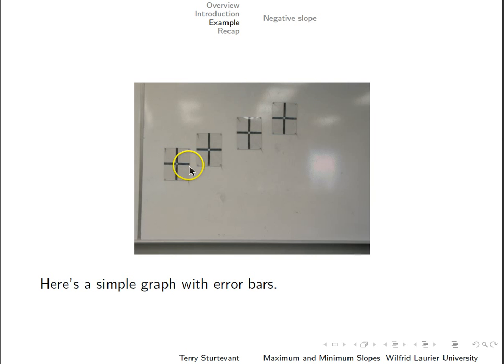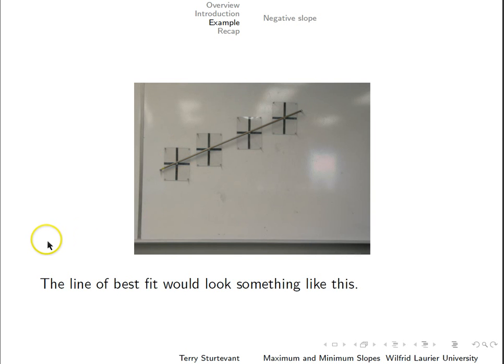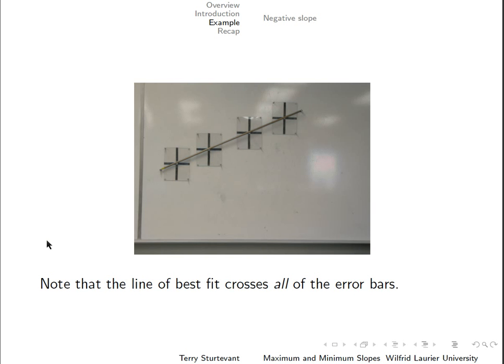For this value of x, this is the x error bar and this is the y error bar. The line of best fit would look something like this — you'll notice it goes through all the points. Note that the line of best fit crosses all of the error bars.